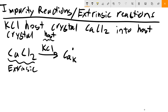Once you write that first defect, you need to see how to charge-compensate, because we need the net neutral crystal condition. One way to create a net negative charge is by creating a cation vacancy: where K was initially we kick it out and create a vacancy. The final charge is zero; the initial charge was plus one. So zero minus one gives prime - a negative one charge. Our crystal is now charge neutral: plus one and negative one yield zero.